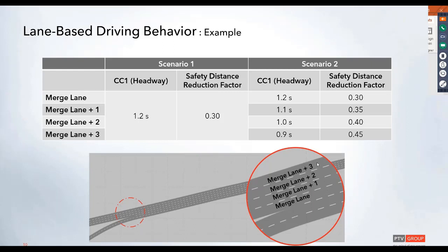For each of these lanes, as we get farther away from the merge lane, we're going to drop down the headways by a tenth of a second, and then the safety distance reduction factor will increase by five hundredths each time.